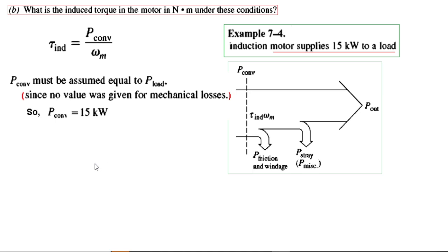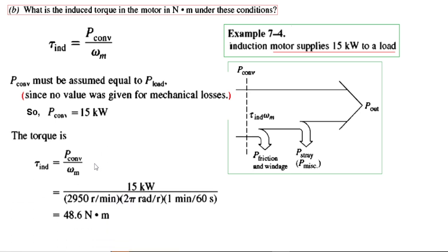ω_m has already been calculated. For the torque it must be in radians per second, so P_converted is 15 kilowatt and the motor speed is converted by multiplying by 2π and dividing by 60. This gives us the induced torque in Newton-meters.